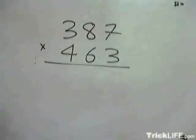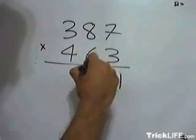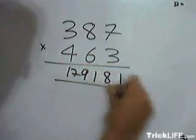In this video we will see how to multiply two three-digit numbers in one step. So you can multiply 387 by 463 as fast as that.